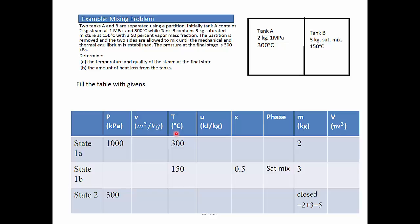Step 2. Find the missing properties. The two tanks for state 1 are specified as two separate states. During the final state, the partition is removed. Since the control volume includes both tanks, we assume the system is closed.